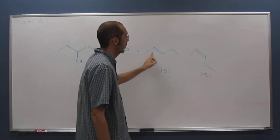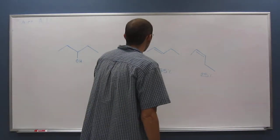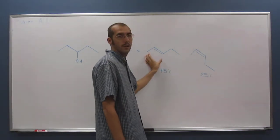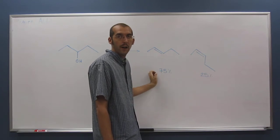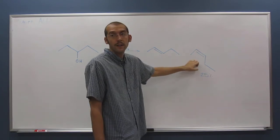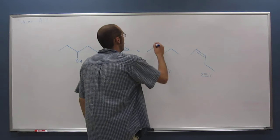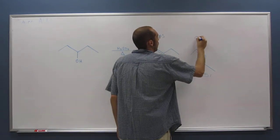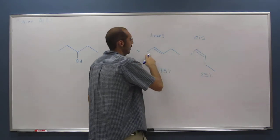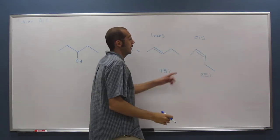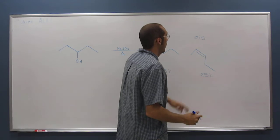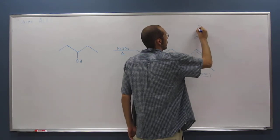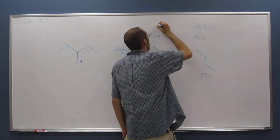We're getting this mixture of products, as you would imagine. The trans product is the major product, and the cis product is the minor product. Remember, trans is when they're on opposite sides, and cis is when they're on the same side, or sometimes we call this Z and E.